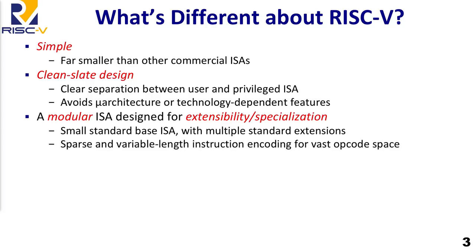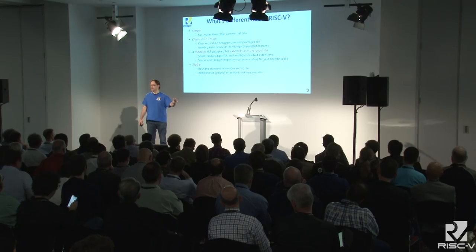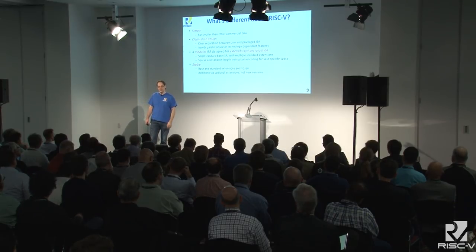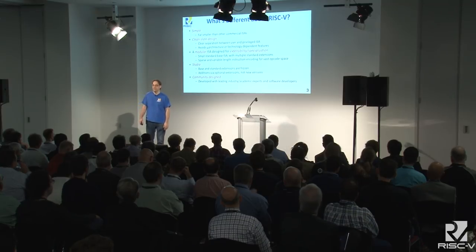Part of how we achieve that goal is by making it a modular ISA: there's a base that's mandatory and then optional extensions designed to fit together to attack any given application area. At Berkeley this was a research project focused on extensibility and specialization — we wanted to leave a lot of opcode space available for custom extensions and keep the base ISA very small. It's also stable: we freeze each extension and don't keep iterating with version 0.1, 0.2, etc. The base ISA has been unchanged since 2014, and additions are done by optional modular extensions, not by versioning.